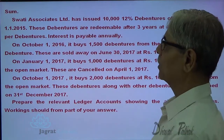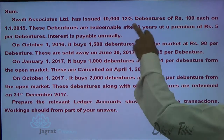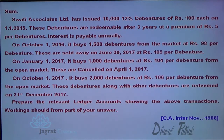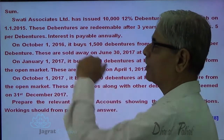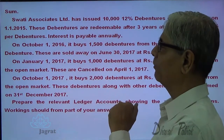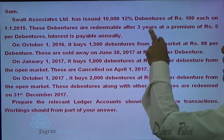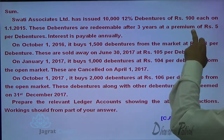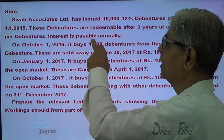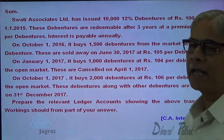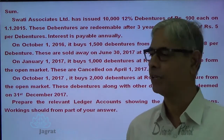Swati Associates Limited has issued 10,000 twelve percent debentures of Rs. 100 each on 1st of January 2015. These debentures are redeemable after three years at a premium of Rs. 5 per debenture. Interest is paid annually, that is on 31st of December every year.